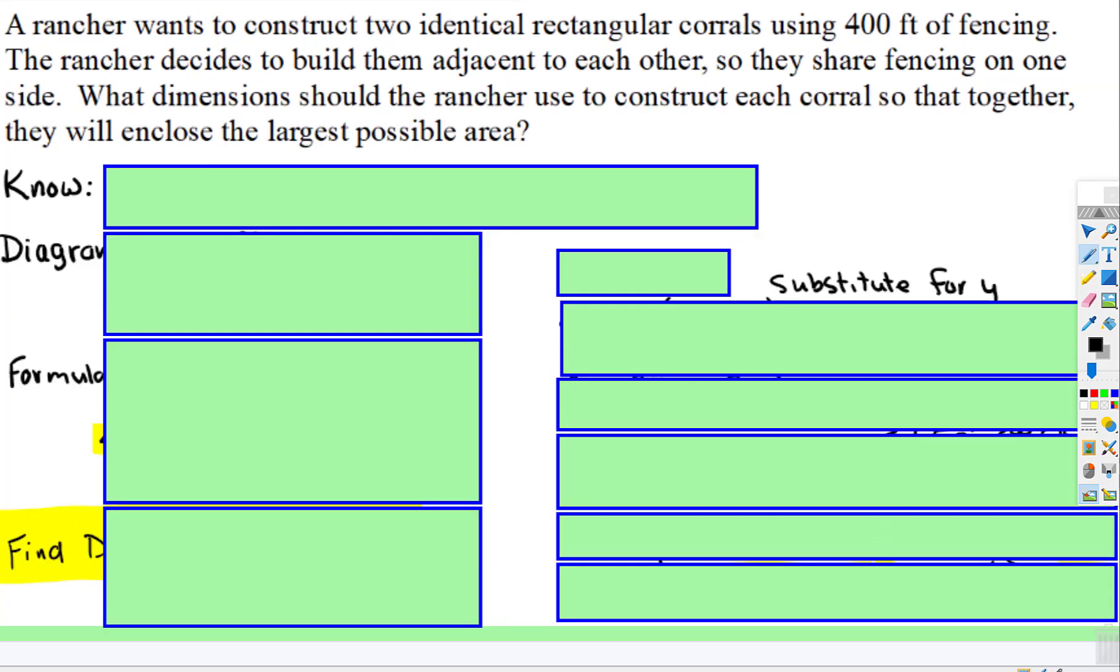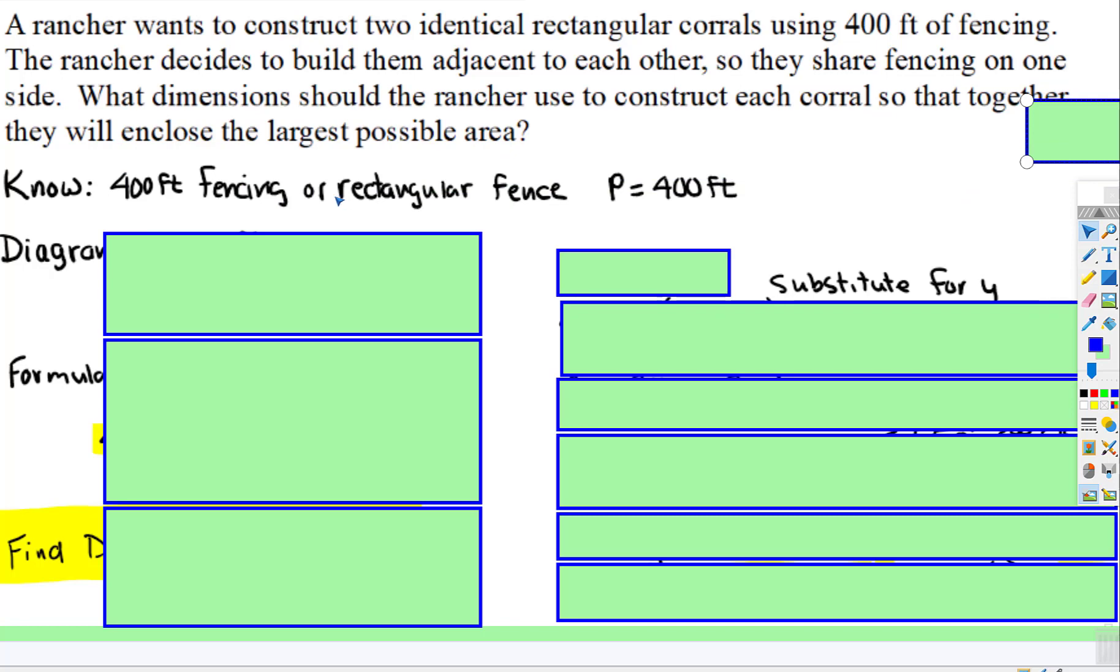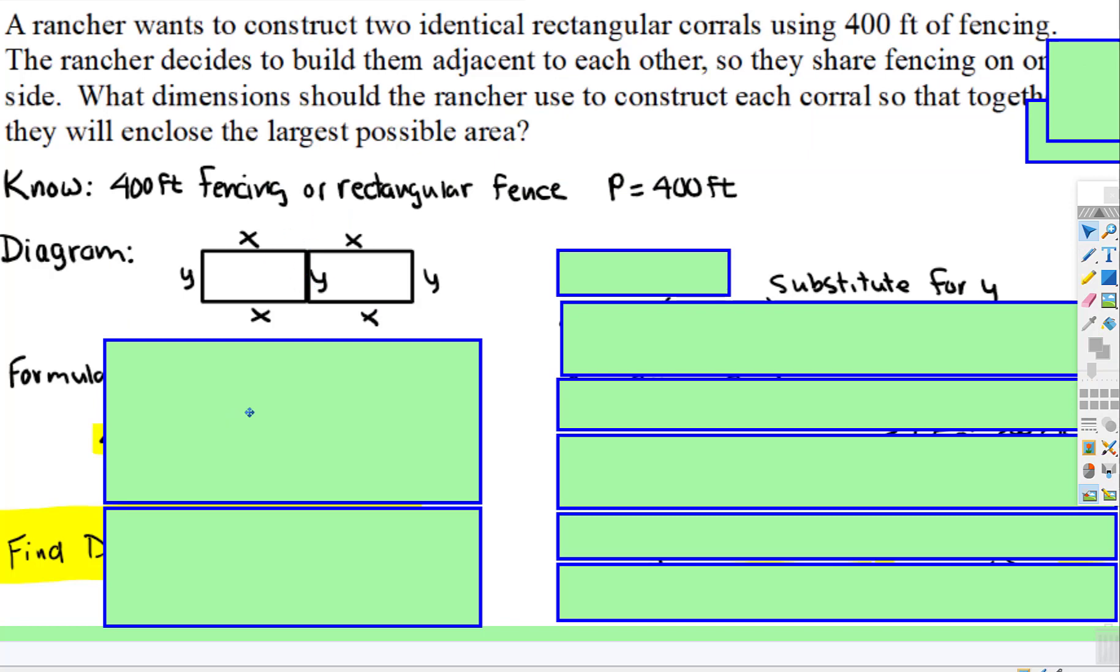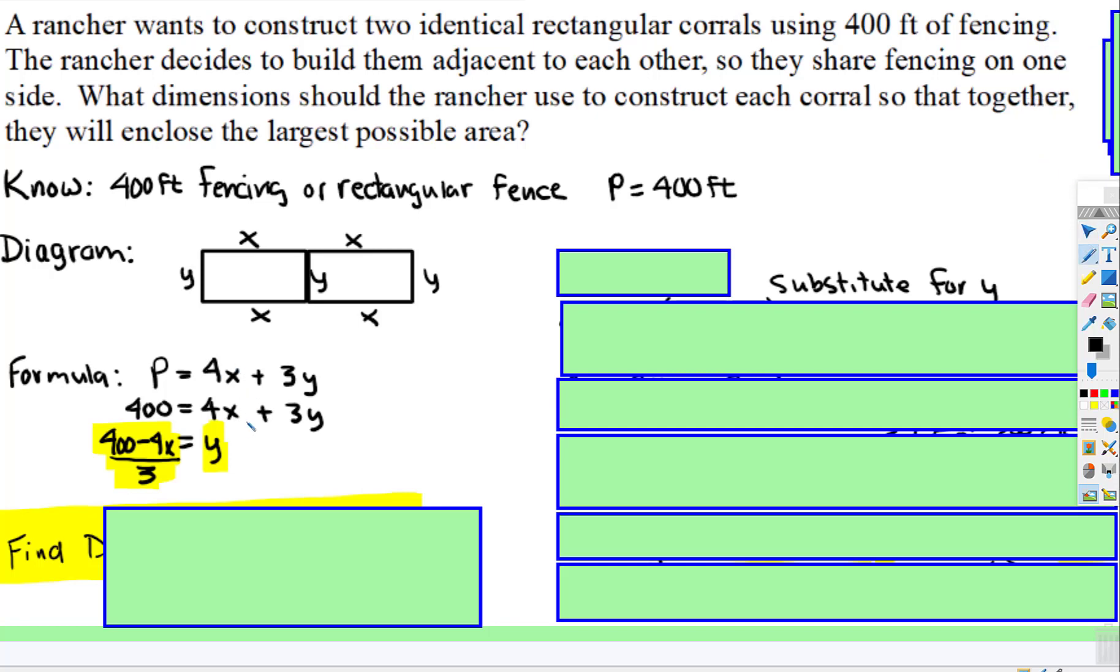And then, once we have it set up, then on your paper, you'd say, well, what do we know? We know there's 400 feet of fencing, and you're going to be doing two rectangular fence. You draw the diagram. I drew it a little bit differently on the bigger one. And then, there's a couple formulas. Not only do we have this perimeter, but we also know then that the area of this entire space, area is going to be 2x times y.